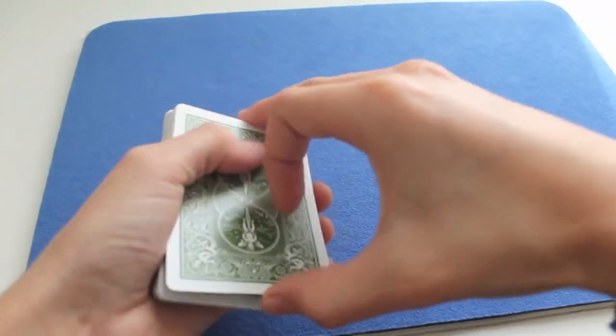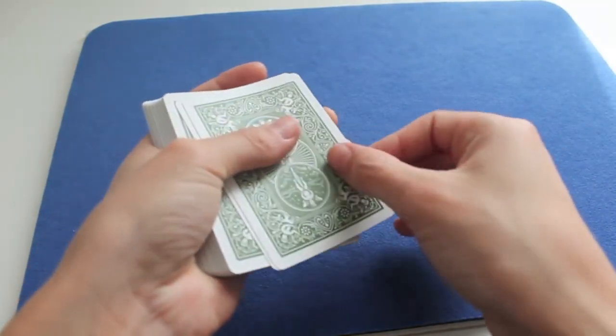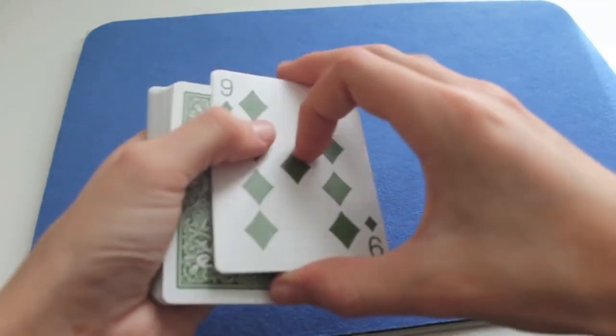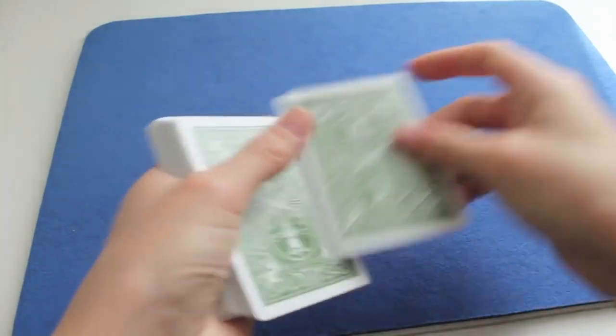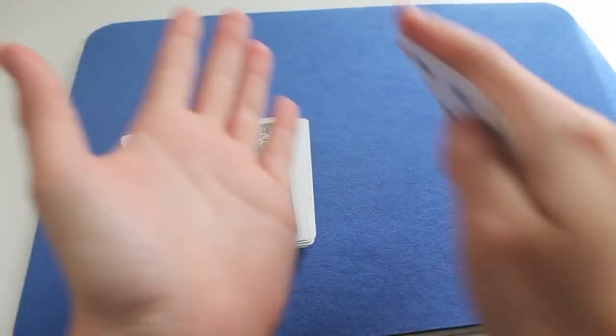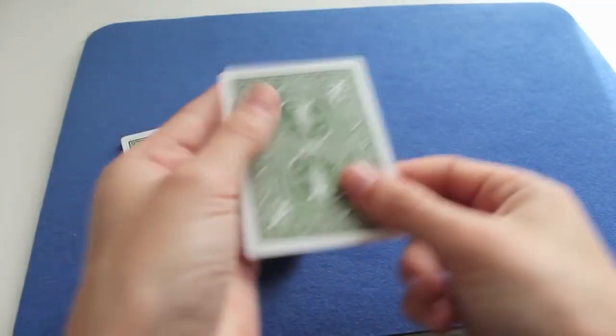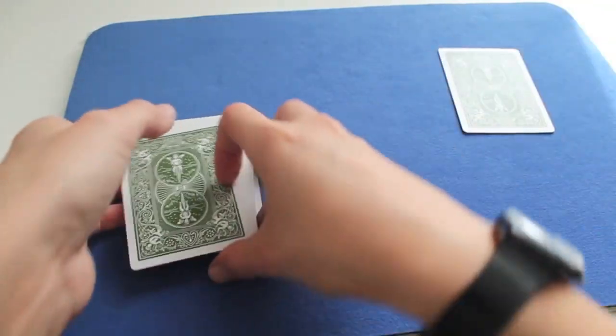So, then you show that, you do your double lift, and you show that the top card, which is actually the six of hearts, is the nine of diamonds. You put it there, they put their hand on it, or they can even place it between their hands, so they feel it's even more secure.